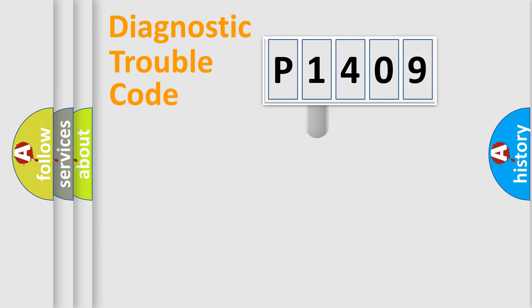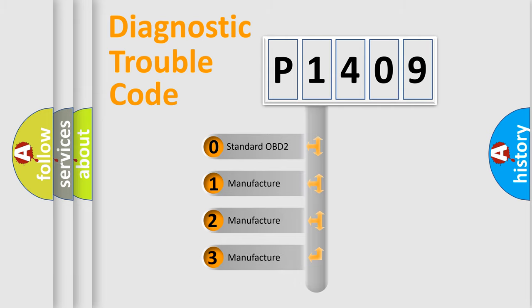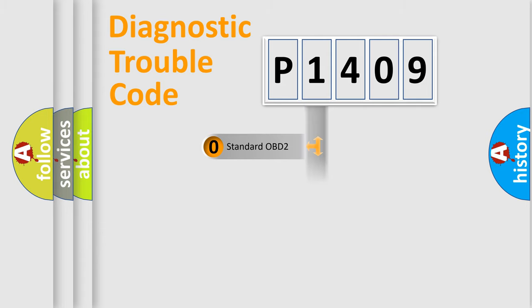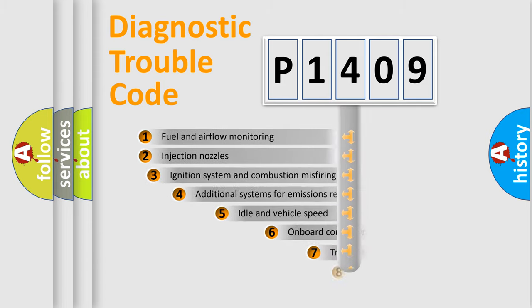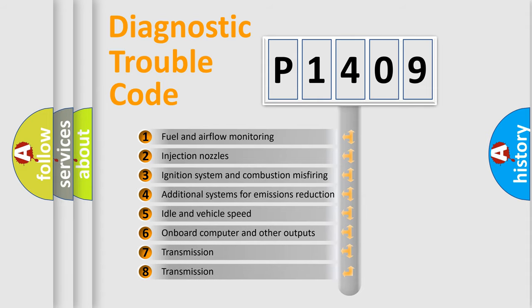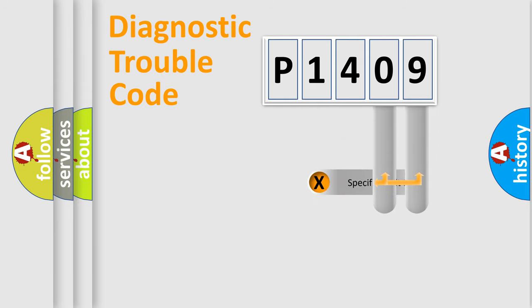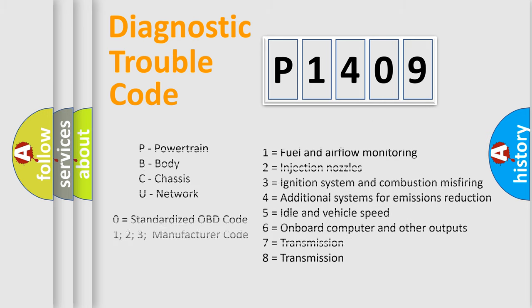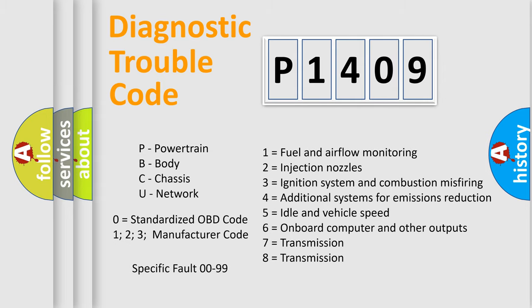This distribution is defined in the first character of the code. If the second character is expressed as zero, it is a standardized error. In the case of numbers 1, 2, or 3, it is a more specific car-manufacturer expression. The third character specifies a subset of errors. Only the last two characters define the specific fault of the group.